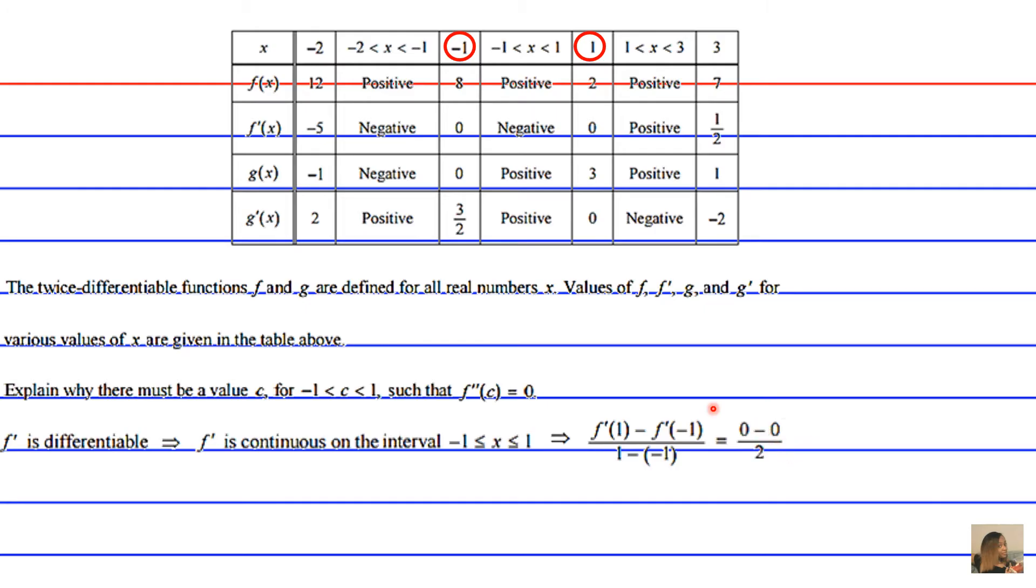We just go ahead and plug in the values that we see on our table for the numerator and simplify the denominator. Therefore, we get a value of 0, an average value of 0 for the slope, or in this case, the derivative of f prime, also known as f double prime, or the second derivative.